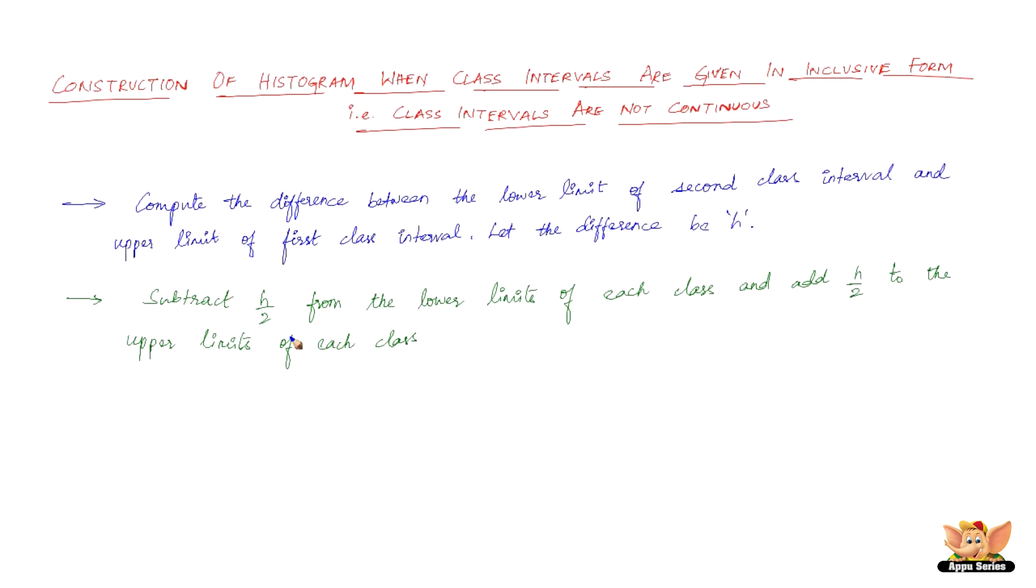So after converting the given class intervals into the continuous intervals, we draw the histogram with reference to the continuous class intervals. That is we draw the histogram with reference to the converted or the changed data. So the examples in the forthcoming videos will illustrate this procedure.